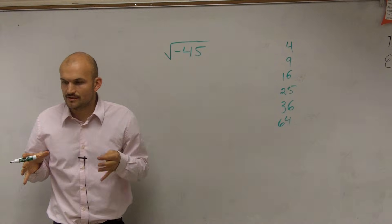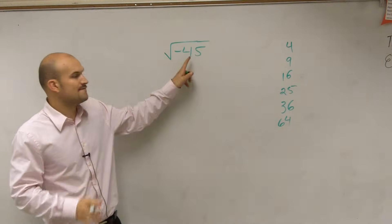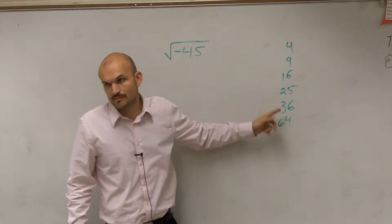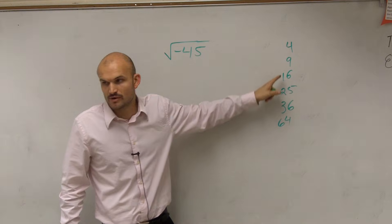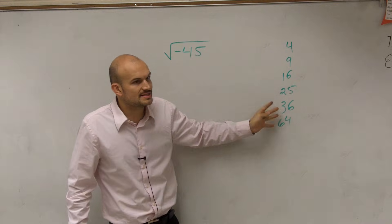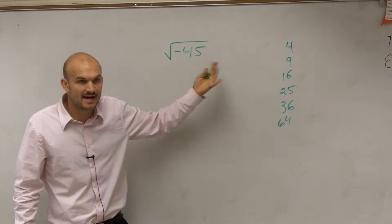So to simplify radicals, what you want to do is factor your radicand by one of these square numbers. Because can we take the square root of all these numbers? Yes. So if I can get one of these numbers under my square root, I can find the value.